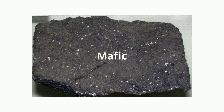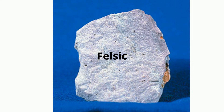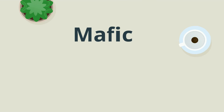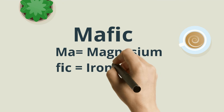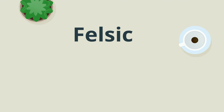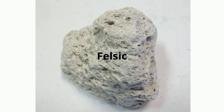Mafic rocks are dark in color and felsic rocks are lighter in color. The names give you a clue about what minerals make up these rocks. Mafic breaks down into MA for magnesium and FIC, which is Latin for iron. Felsic breaks down into FEL for feldspar and SIC for silica. Let's take a look at some mafic and felsic igneous rocks.